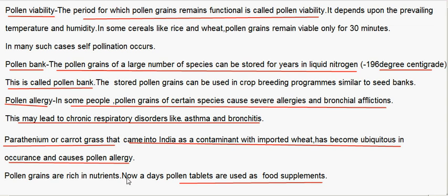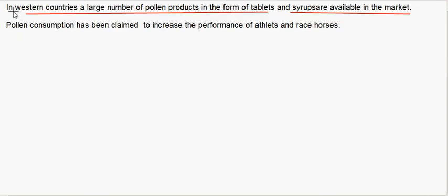Parthenium or carrot grass — pollen grains that came into India as a contaminant with imported wheat have become ubiquitous in occurrence and cause pollen allergy. Pollen grains are rich in nutrients. Nowadays, pollen tablets are used as food supplements. In Western countries, a large number of pollen products in the form of tablets and syrups are available in the market. Pollen consumption has been claimed to increase the performance of athletes and race horses.